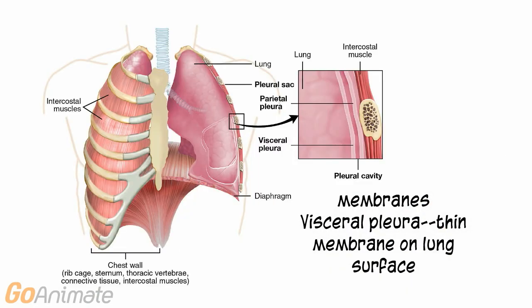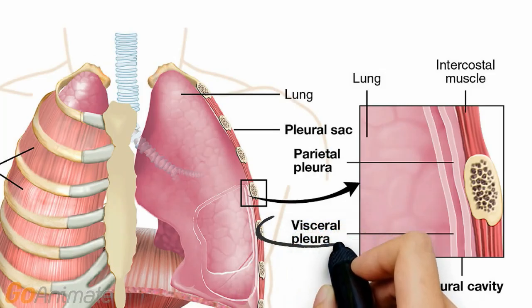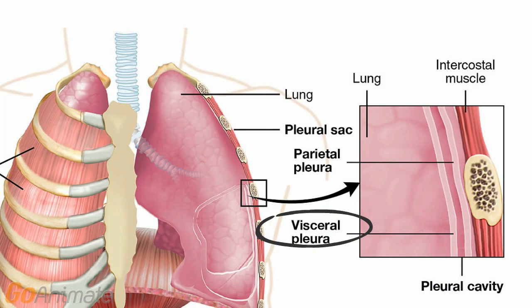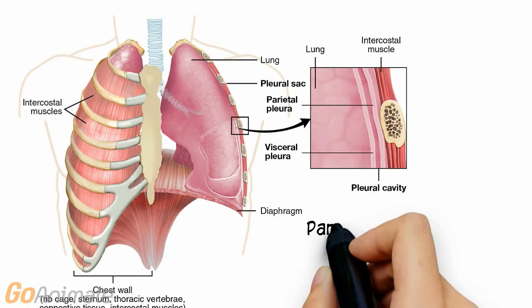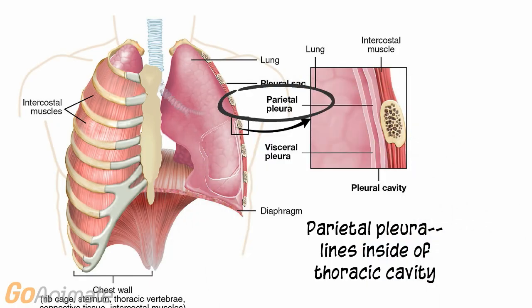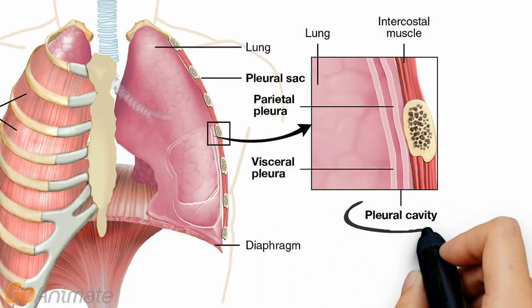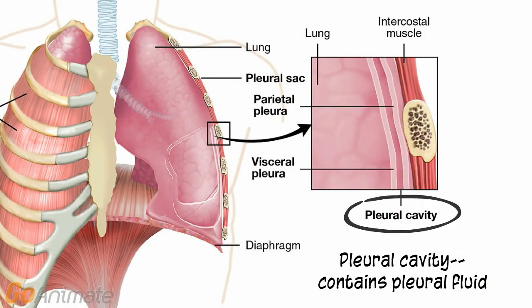There are 2 pleural membranes. The visceral pleura is a thin membrane on the surface of the lung. The parietal pleura is a membrane lining the inside of the thoracic cavity. Between the membranes is a space called the pleural cavity. This space contains fluid that helps reduce friction and sticks to the lungs to help keep them inflated.